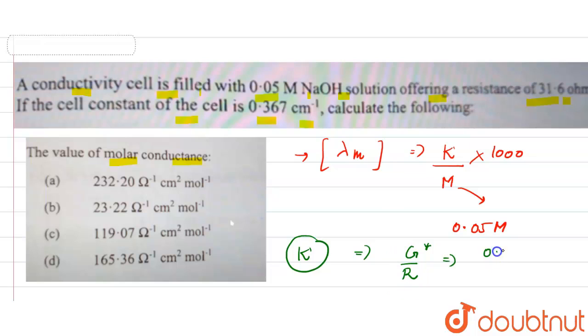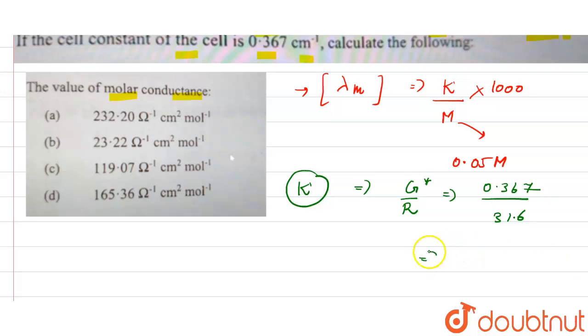What is the value of cell constant? That is 0.367 divided by the resistance 31.6. So this comes out to be 1.16 into 10 raise to the power minus 2 per ohm inverse centimeter inverse.